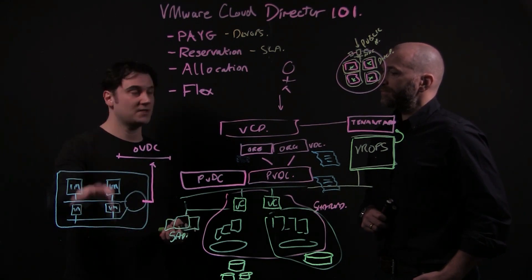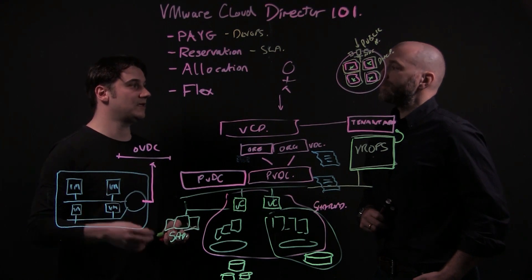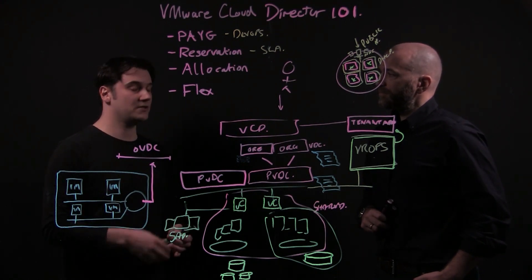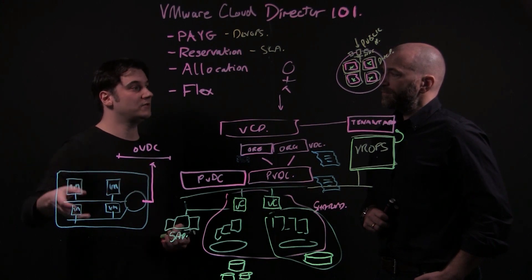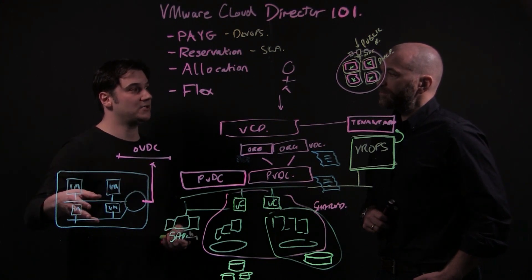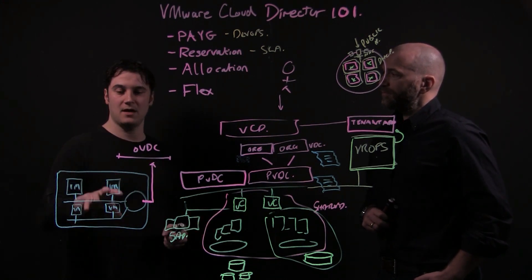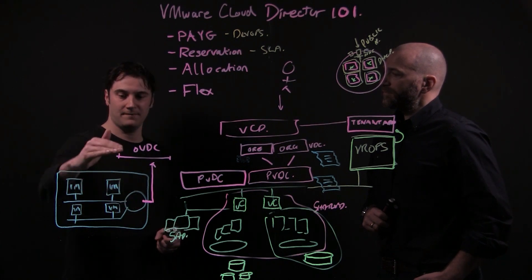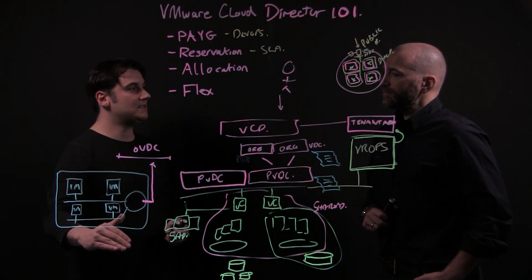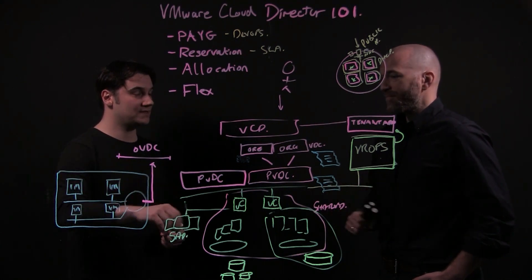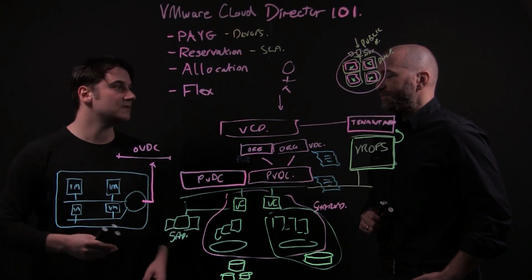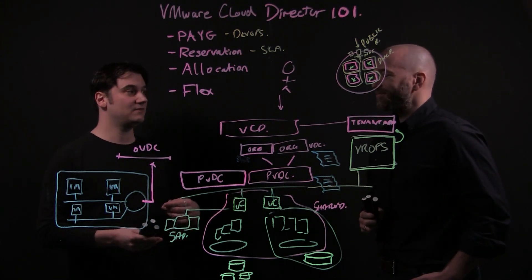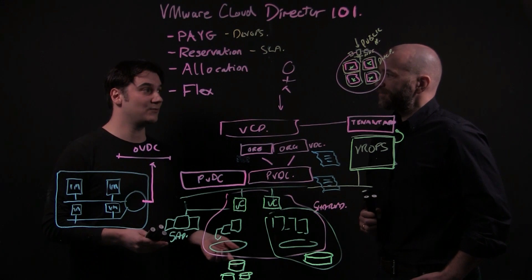Let's say this is my production internet-facing application, and I need to do some testing for the next upgrade version. Rather than build a whole new stack of this application, which requires specialist skills and time, I can just clone this — take a copy of the entire vApp. All the IP scheme and all the network layouts are taken with it. When I connect this up to my OVDC, it gets a different IP, and I could even VPN into it if I wanted to.